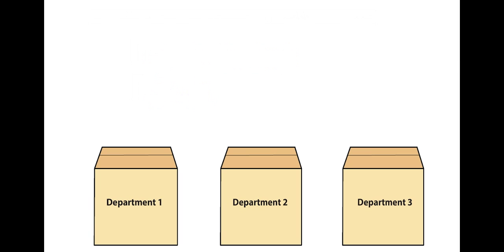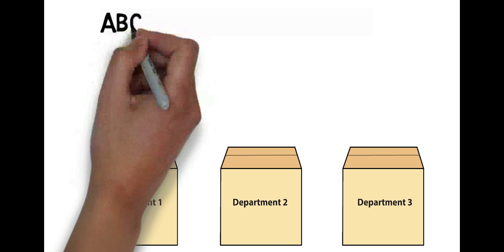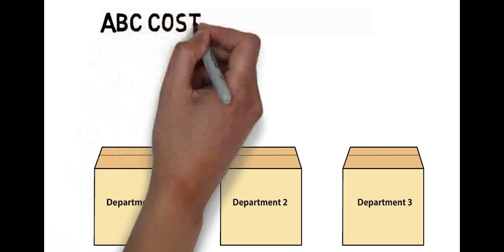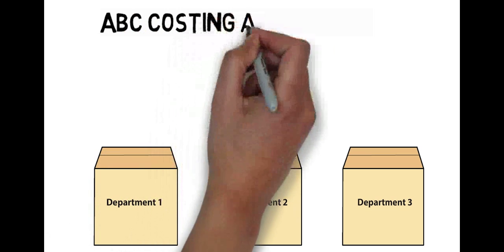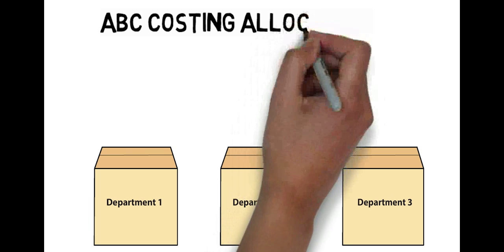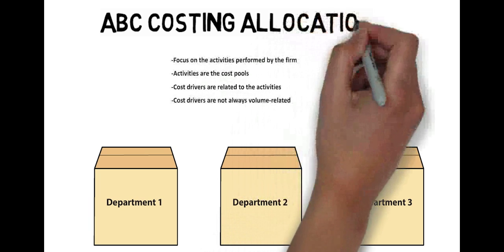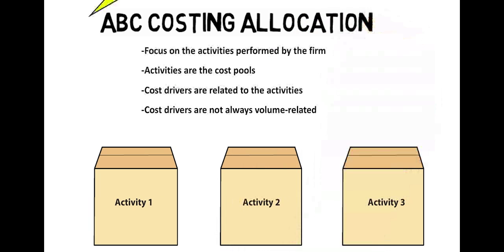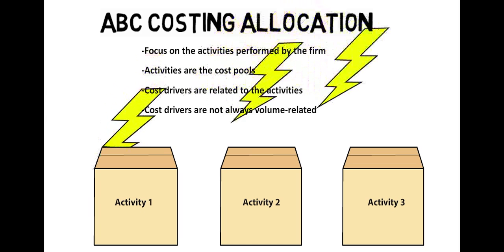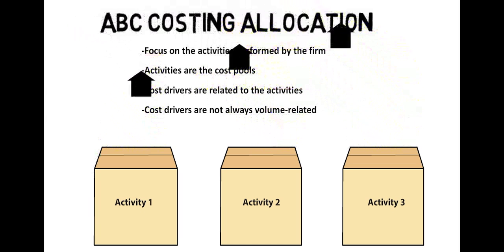Activity-based costing, or ABC, focuses on the actual activities or tasks performed by the firm. Instead of accumulating costs based on the plant or departmental structure of the firm, ABC identifies and uses the major activities in the production process as the cost pools. Cost drivers are then selected that best represent how products use the resources consumed by each activity.